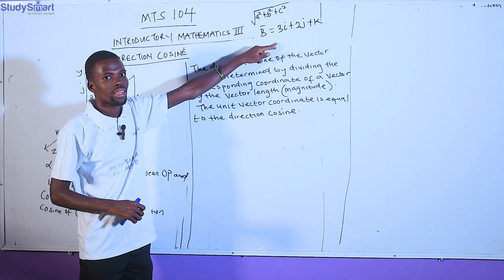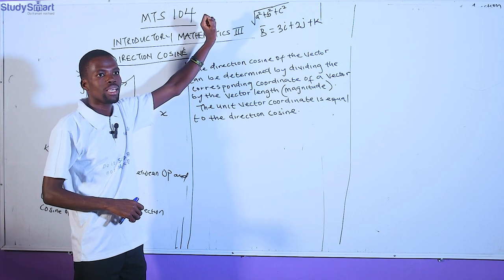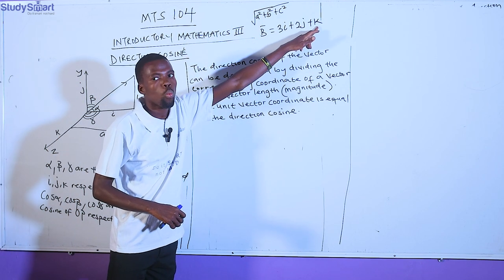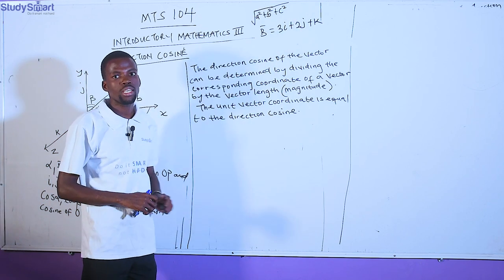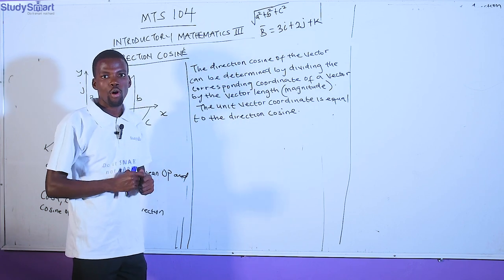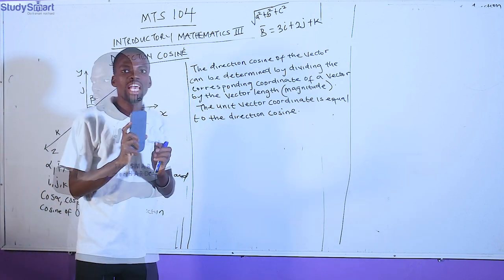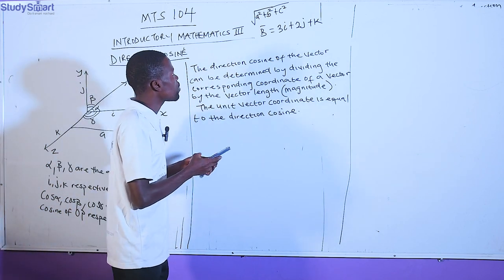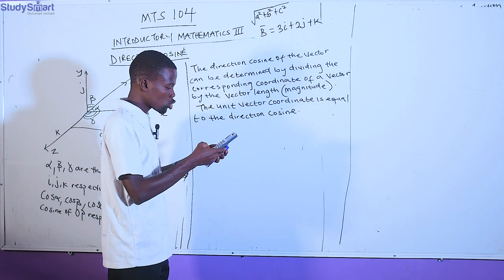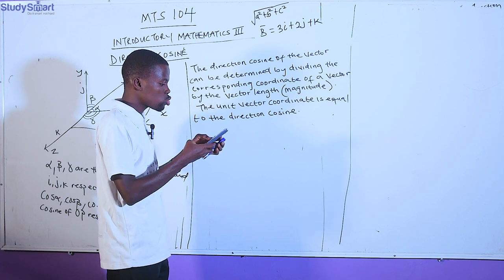3 squared is 9, plus 2 squared which is 4: 9 plus 4 is 13, plus 1 squared which is 1, that gives 14. So the magnitude of this vector is √14. In the exam hall, just use your calculator — press 3² + 2² + 1², which gives 14, then take square root of 14.